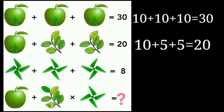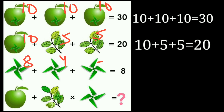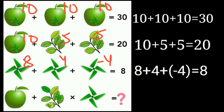Let me go through again. Equation 1: 10 plus 10 plus 10 equals 30. Equation 2: 10 plus 5 plus 5 equals 20. Equation 3: the value is 8 — this one is 4 and this one is minus 4, opposite sides. Now in the last equation, there is only an apple and no leaf fan. From the third equation, the value of the leaf is 4. In the first equation, apple-and-leaf-fan equals 10, so apple equals 10 minus 4, which is 6.